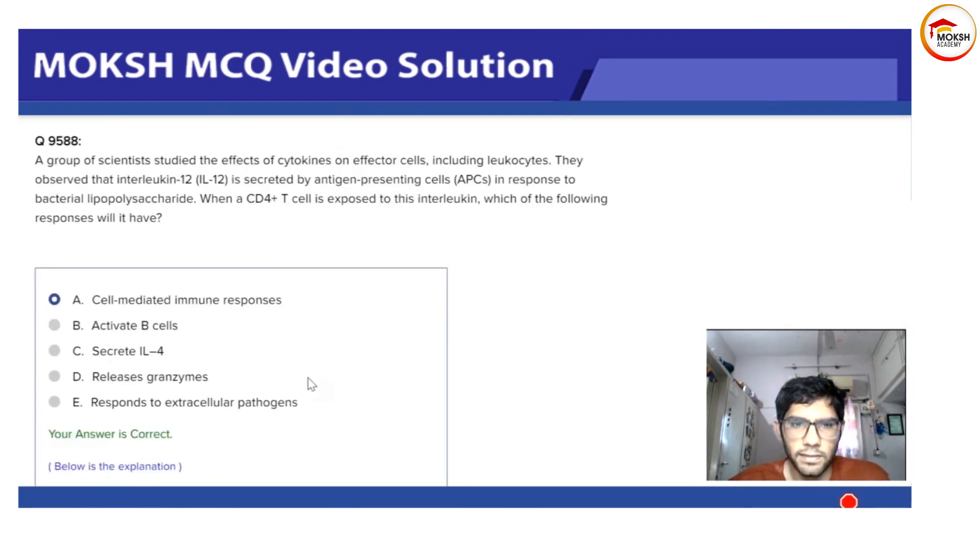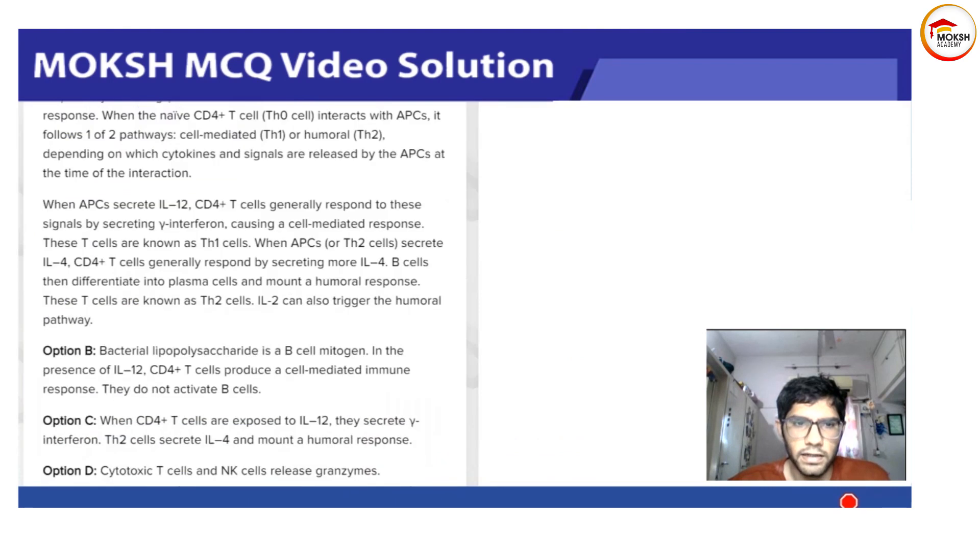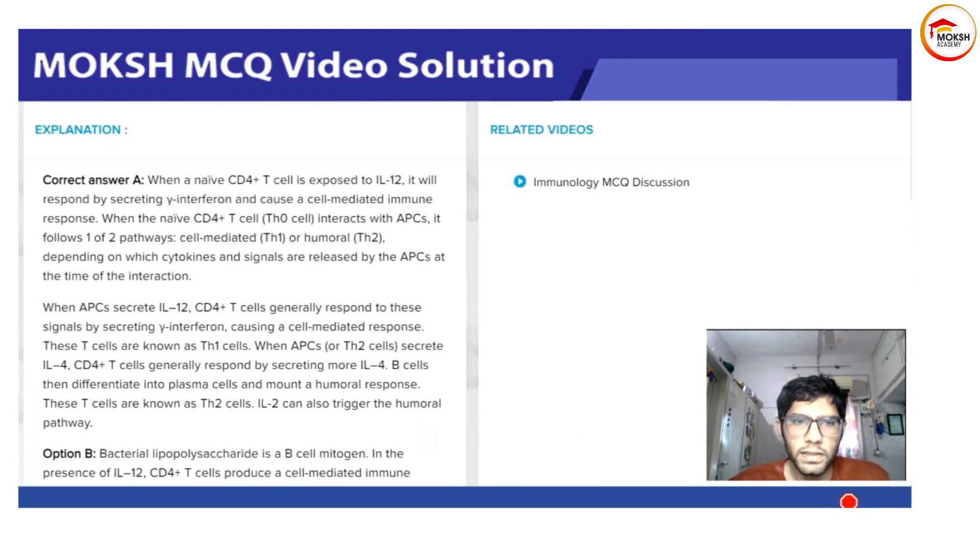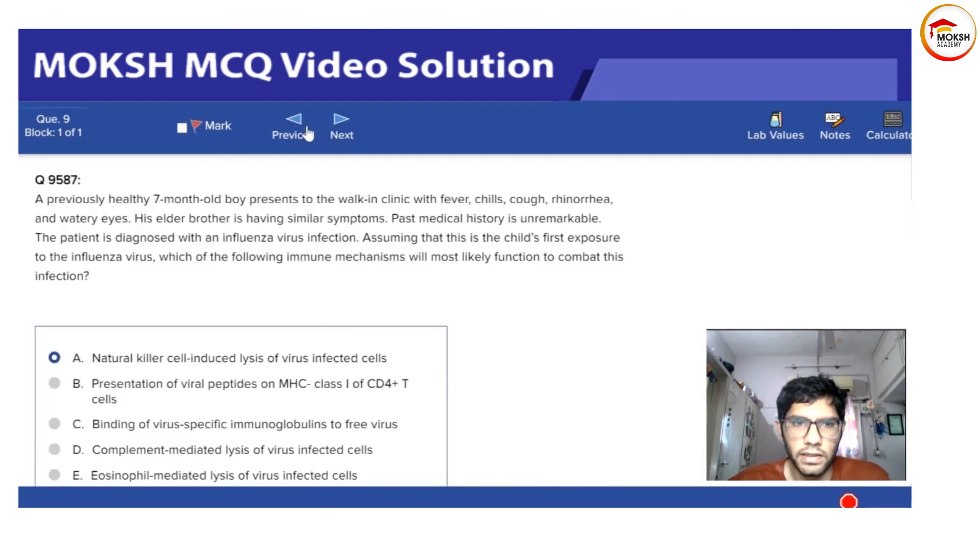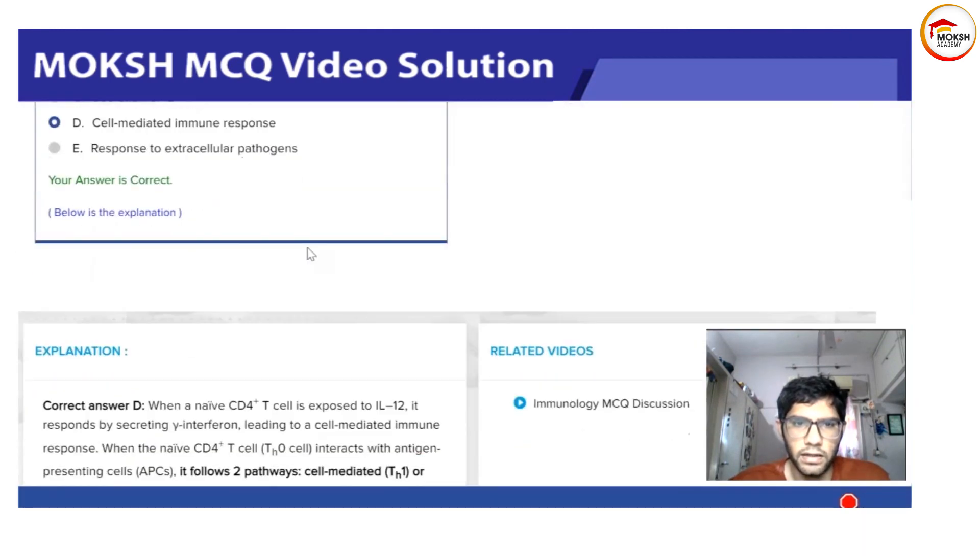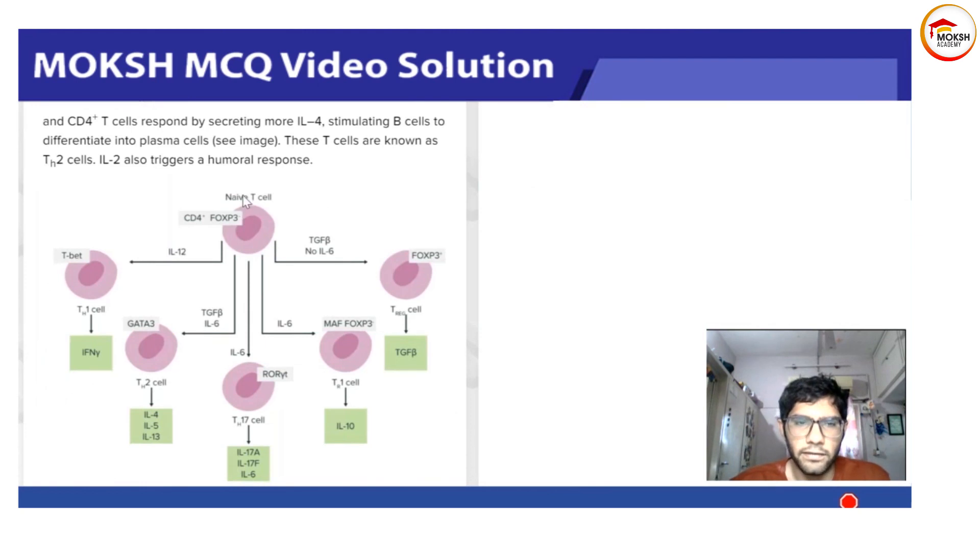I'll show you the question once again—this is important. Whenever a naive T cell is exposed to IL-12, we'll get a Th1 response. T-bet is the gene that will be activated.